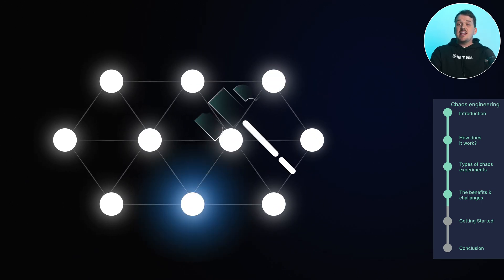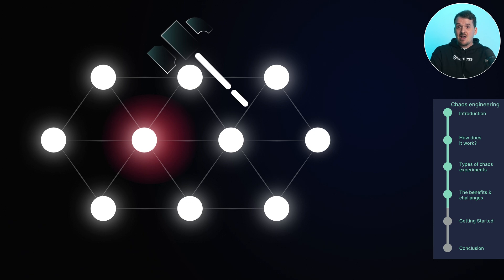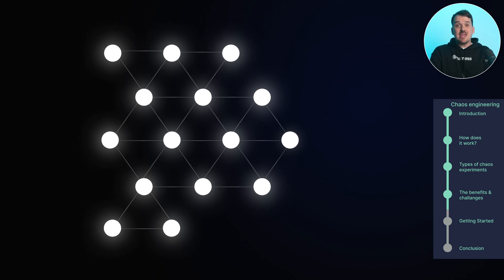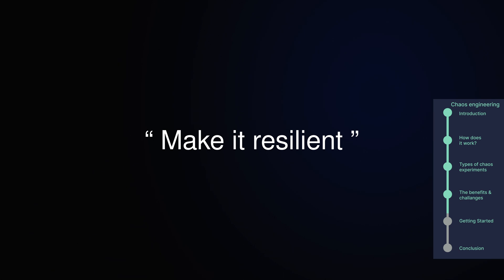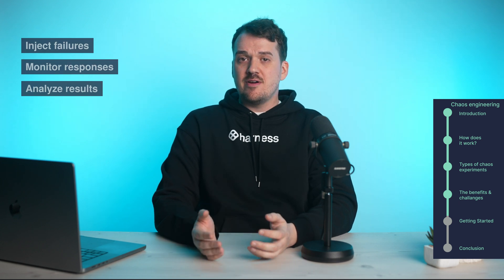Of course, chaos engineering isn't without its challenges. Designing effective chaos experiments requires a deep understanding of your system's architecture — you need to know where potential failure points are and how to simulate them without risking severe disruption. As systems grow more complex and interconnected, predicting how failures will cascade through the system becomes tougher, so you need to account for these interactions and ensure the experiment stays controlled. It also takes a cultural shift: teams must embrace failure as an opportunity for learning, moving from a keep-it-stable mindset to a make-it-resilient approach. Lastly, implementing chaos engineering can be resource-intensive — you'll need the right tools and infrastructure to inject failures, monitor responses, and analyze results. However, the long-term benefits far outweigh the initial investment once the process is in place.